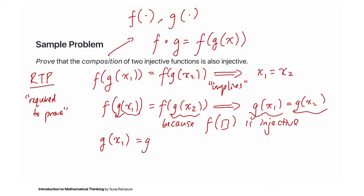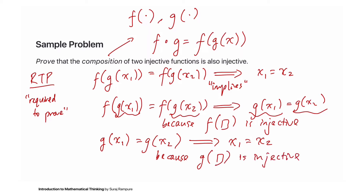If g(x1) = g(x2), and since g is also injective, it means x1 = x2. If g at some input equals g at some other input, those inputs must be equal — that's exactly what injectivity means. So we've proven that the composition of two injective functions is also injective.